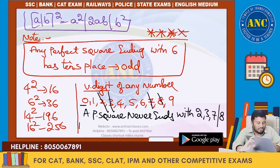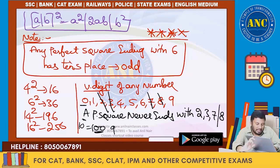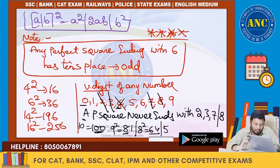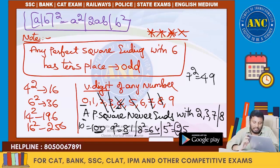If a perfect square ends with 0, like 10² = 100, it ends with an even number of zeros. If it ends with 1, like 9² = 81, the tens place is even. If it ends with 4, like 8² = 64, the tens place is even. If it ends with 5, like 5² = 25, it ends with 2 in the tens place. If it ends with 9, like 7² = 49, the tens place is even.